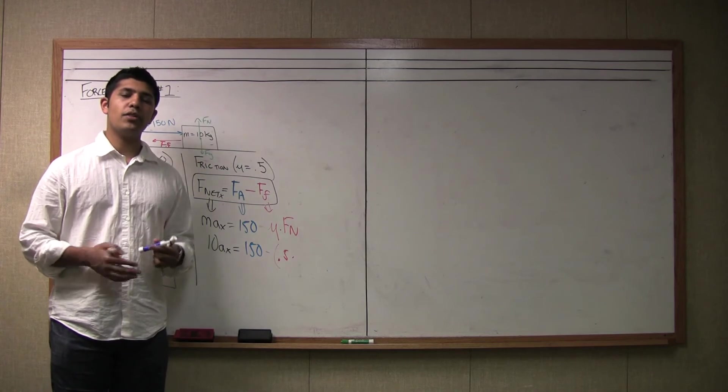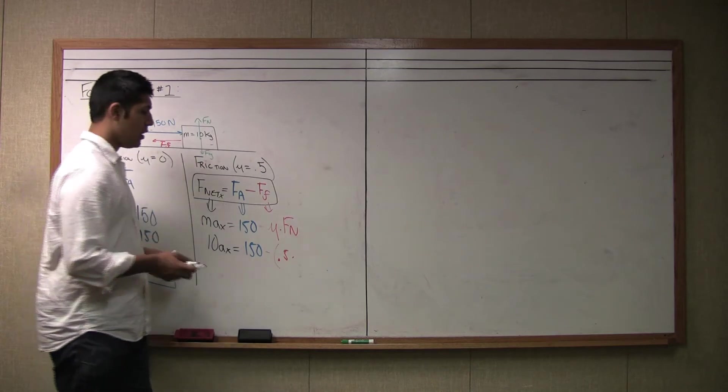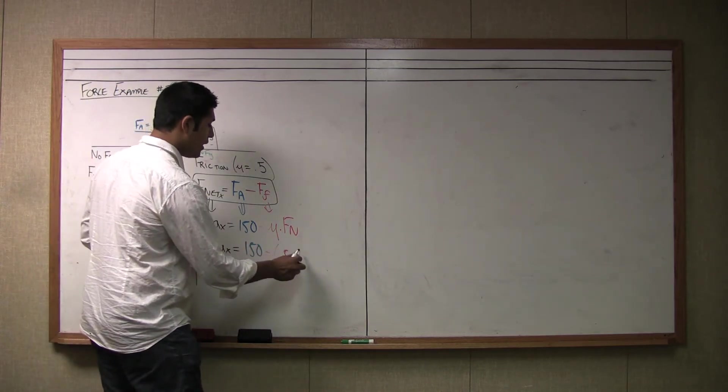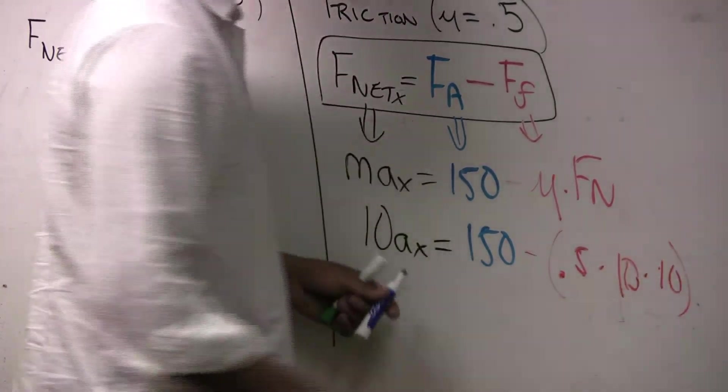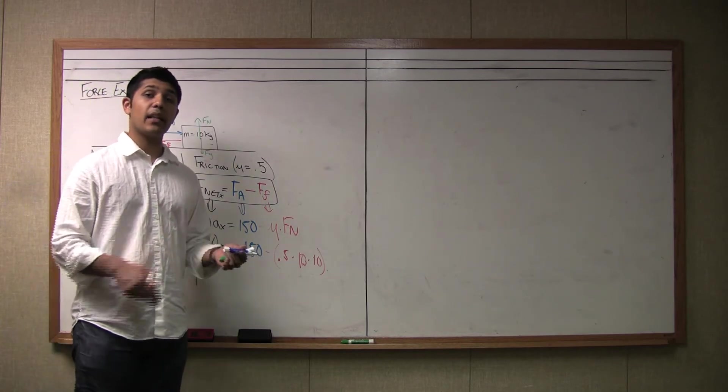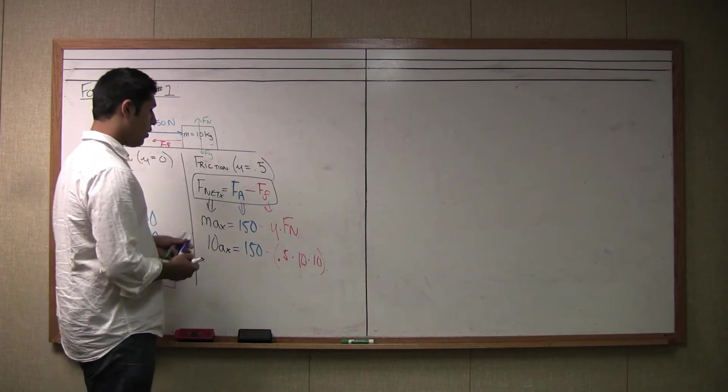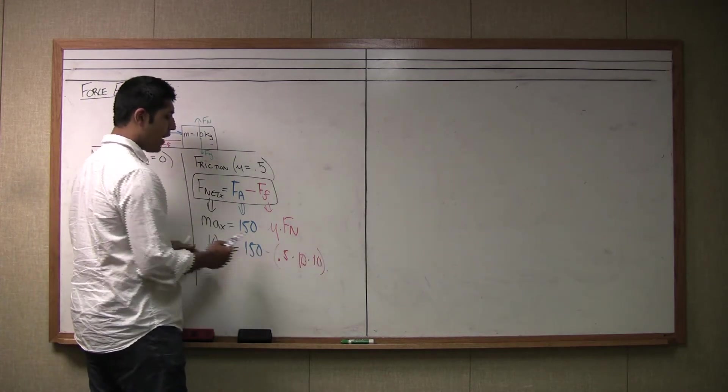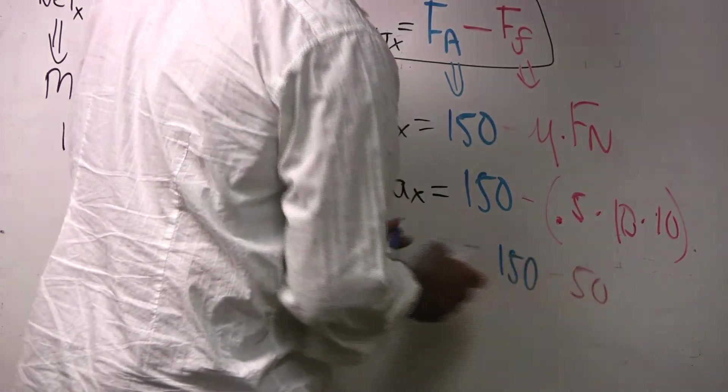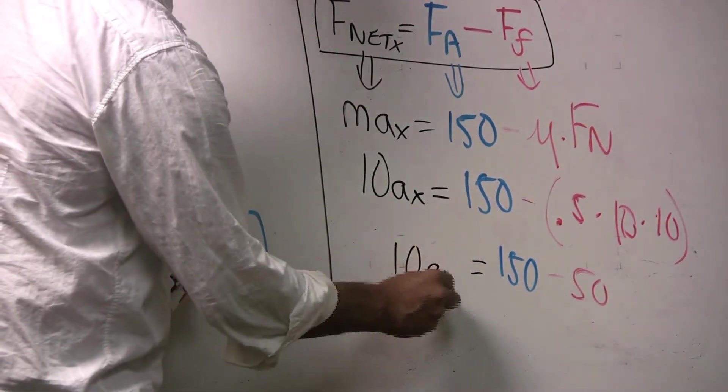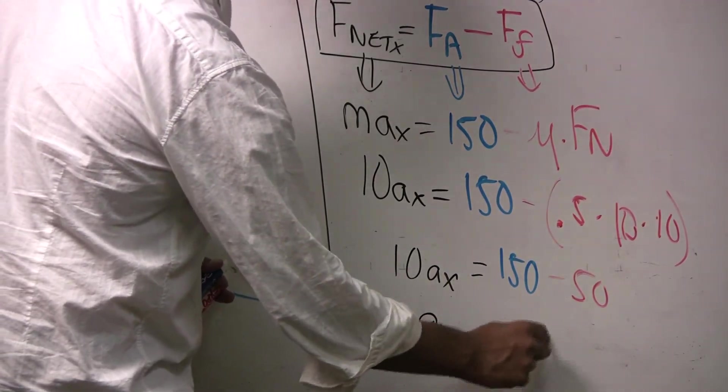From the previous video on the normal force, you should recognize that since we are on a flat surface, the normal force is equal to mass times gravity. So I can put those values in here and the mass is 10 and gravity is about 10. I will just say 10 for simplicity, but in actuality, if we are using a calculator, we can use 9.8. Now let's solve here. So 10 times 10 is 100 times 0.5 is 50. So I have 150 minus 50 is equal to 10 A x and now A x is going to be equal to 10 meters per second squared.